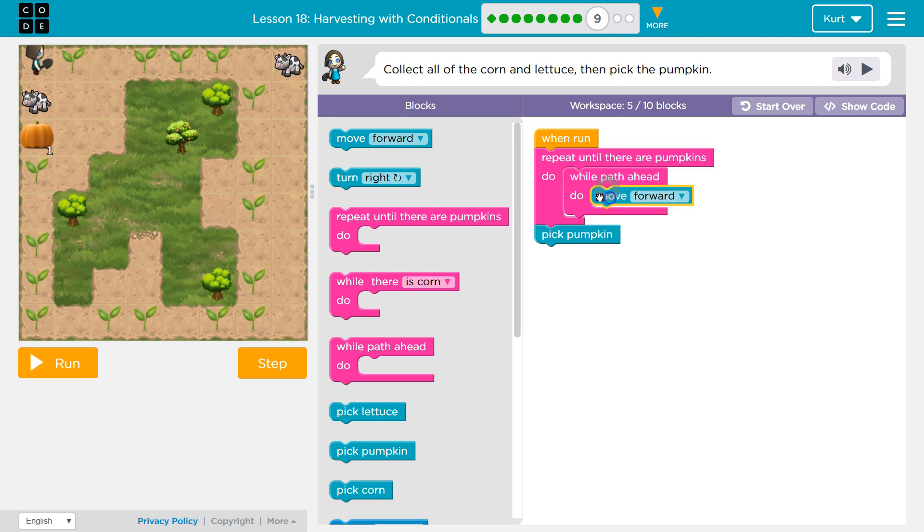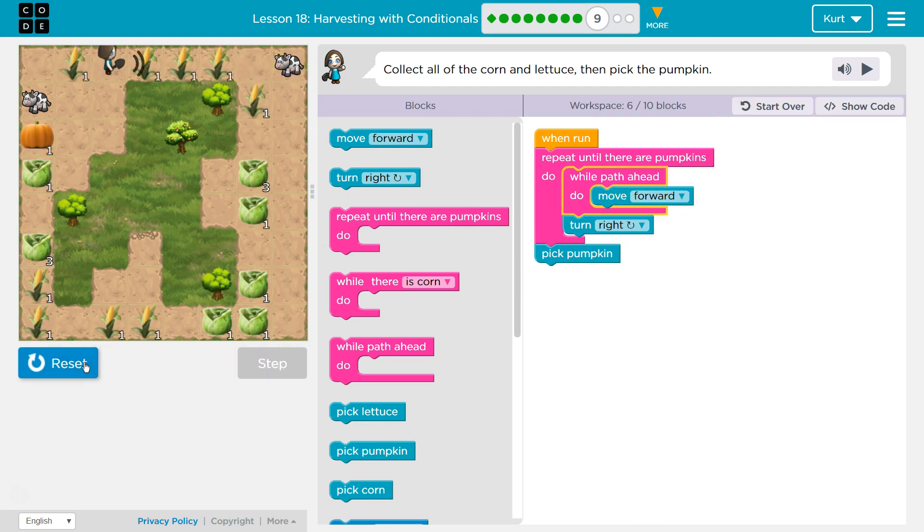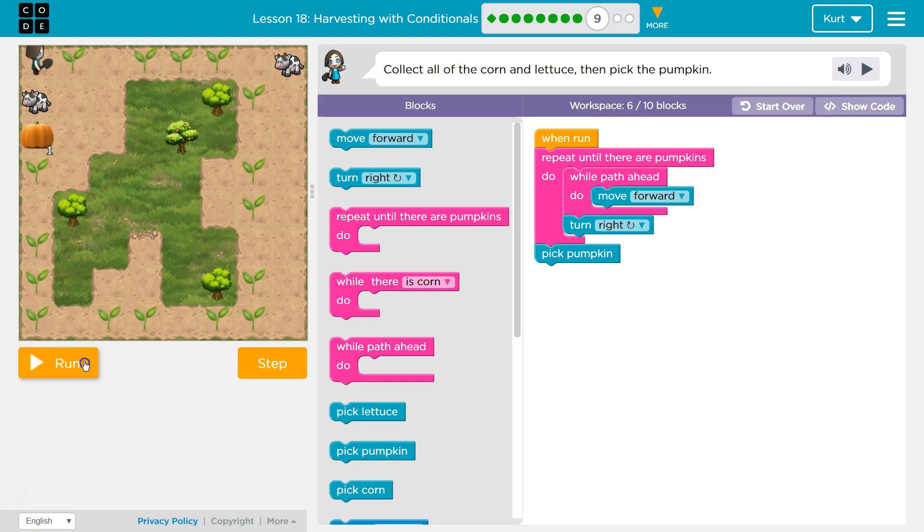So, while there's path ahead, and this is another loop, I'm just gonna keep looping while there's path ahead. Walk, walk, walk, walk. If there's not, I'm gonna want to turn to the right. Let's see, because I'm not sure. Am I gonna hit a cow here? Oh, no. Okay, great.